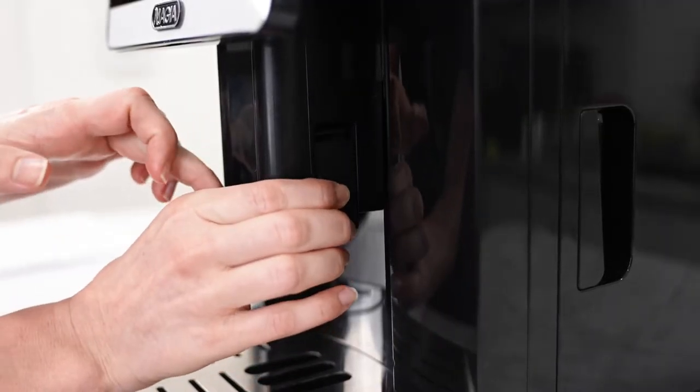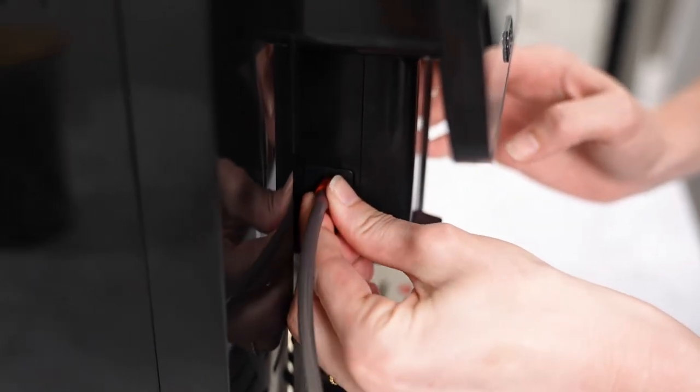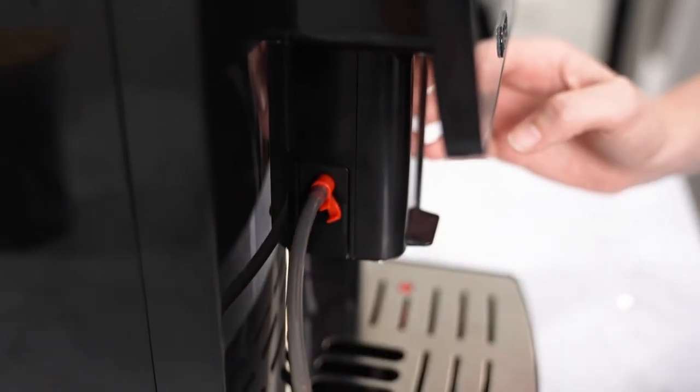Put in the milk system. Install the milk system tube by inserting the red part into one of the holes located on either side of the milk system.